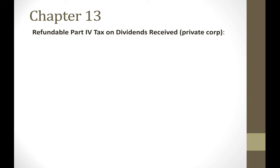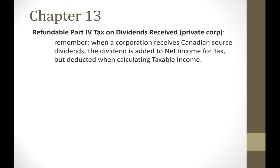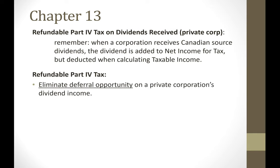There is also another type of refundable tax: refundable Part 4 tax. Refundable Part 4 tax only applies to certain dividend income received by a private corporation. Whereas the ART only applies to CCPCs, refundable Part 4 tax applies to dividend income received by any private corporation. When a corporation receives Canadian-source dividends, they include it in net income but deduct it when calculating taxable income, so there's never any Part 1 tax on those dividends. Part 4 tax takes away any deferral opportunity that would otherwise exist for a private corporation earning dividend income.